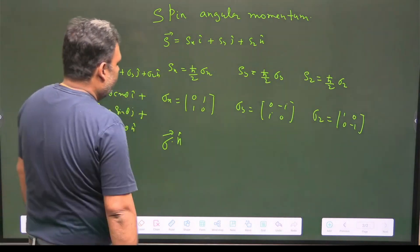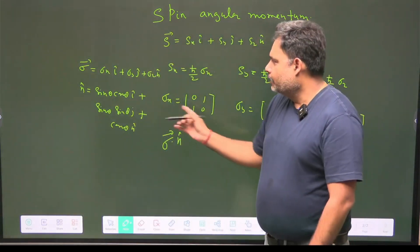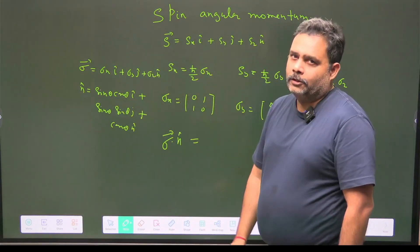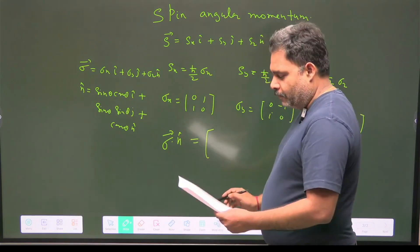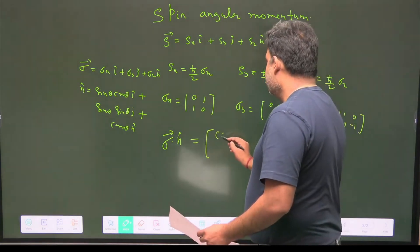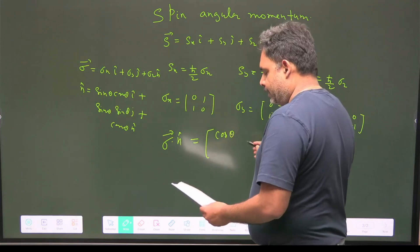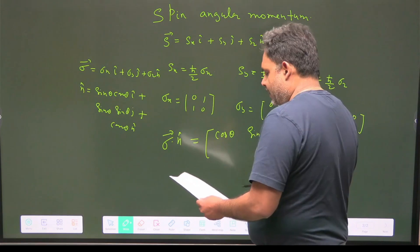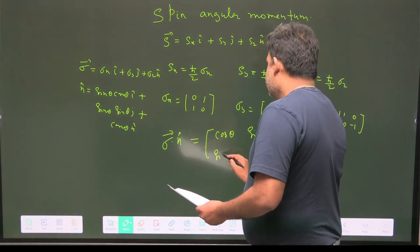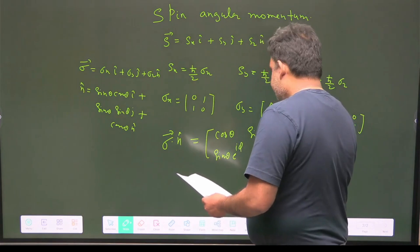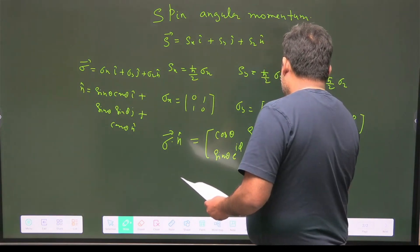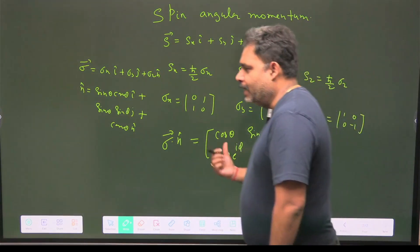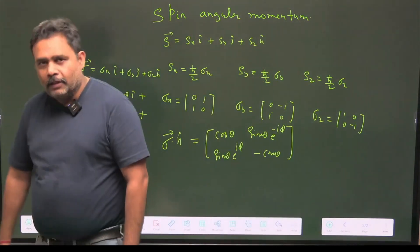When you take the dot product σ·n̂, you get a beautiful 2×2 unitary operator. Its matrix form is: [cosθ, sinθ e^(-iφ); sinθ e^(iφ), -cosθ]. This is a wonderful unitary operator.